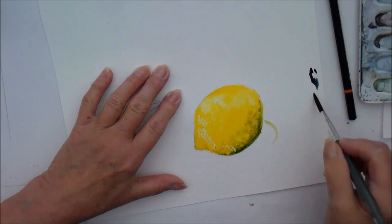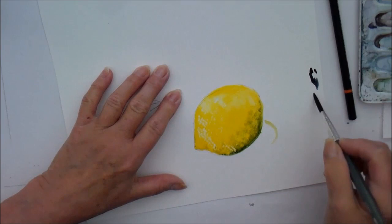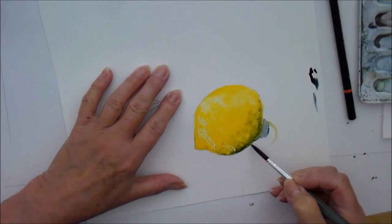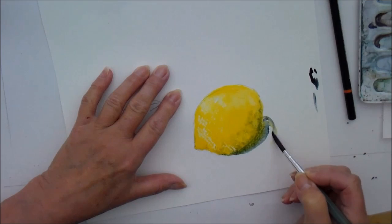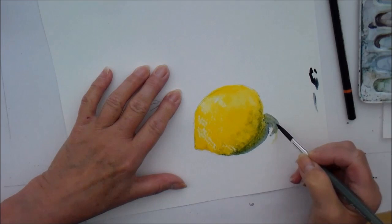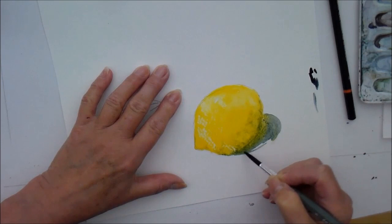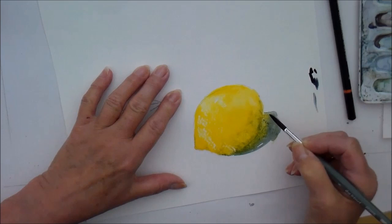So there's our nice shaped lemon. And then why not? Let's just put a bit of shadow. And it doesn't matter if it bleeds. See how that Payne's grey, which has a slight blue tinge mixed with the yellow, gives it a sort of a greeny hue.